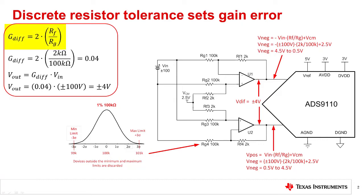The differential gain for this circuit is given by 2 times RF divided by RG, which is 0.04 in this case. So for a plus or minus 100 volt input signal, the differential voltage delivered to the ADC is plus or minus 4 volts.